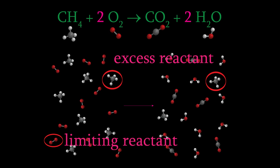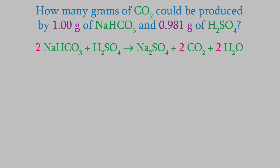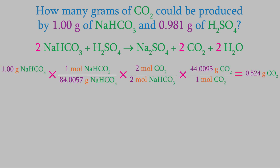So let's try that for the reaction we looked at earlier. We start with 1.00 grams of sodium bicarbonate, and this time let's say we have 0.981 grams of sulfuric acid. Unlike the previous example, we now have a specific amount of both reactants, so we have to worry about which of them is going to run out first — in other words, which one is the limiting reactant. We can't tell just by looking at the masses. So let's calculate how much CO2 we'll get based on each of the two different reactants. We already did that starting with sodium bicarbonate, and we found that we'd get 0.524 grams of CO2.